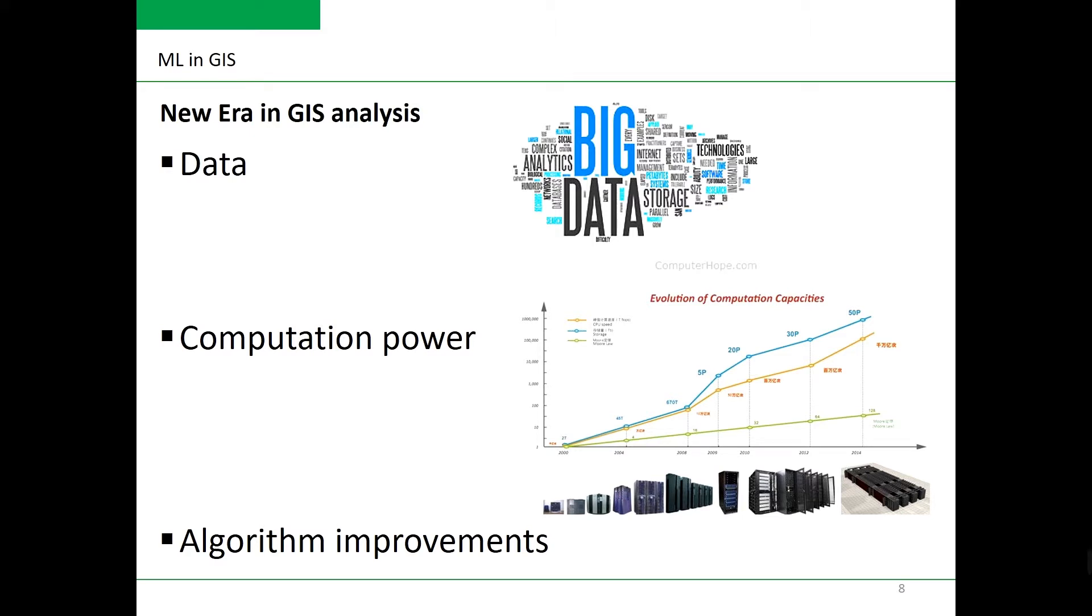In the upcoming lecture, I will give you more examples about each type of machine learning algorithm that is used for GIS and remote sensing applications, starting with classification. With lecture 5, we will conclude the theoretical block of this course and then we will start the practical hands-on exercises which will train you with the practical skills on how to apply machine learning algorithms in the field of GIS and remote sensing. Thank you for watching.